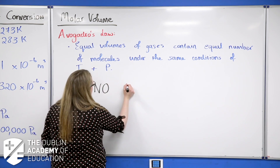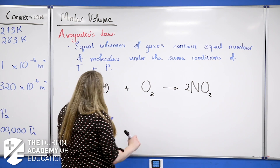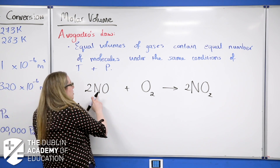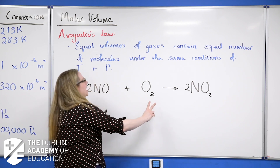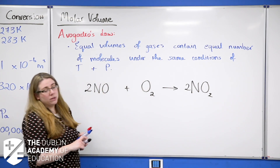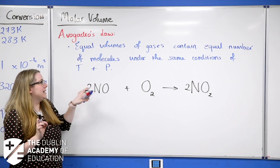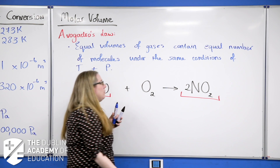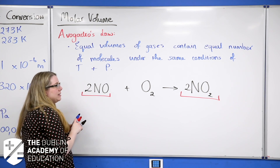Take nitrogen monoxide plus oxygen giving nitrogen dioxide. Using Gay-Lussac's Law, the ratio between nitrogen monoxide and oxygen is 2:1. If I have 200 cm³ of nitrogen monoxide I will need 100 cm³ of oxygen, and I will form 200 cm³ of nitrogen dioxide. For the molar volume, the ratio between nitrogen monoxide and nitrogen dioxide is the same — the number of moles of both is the same.